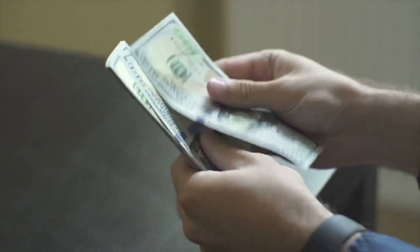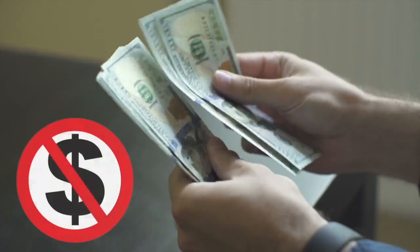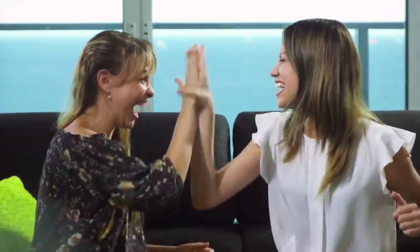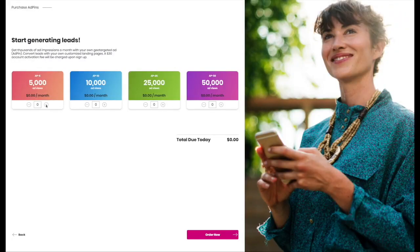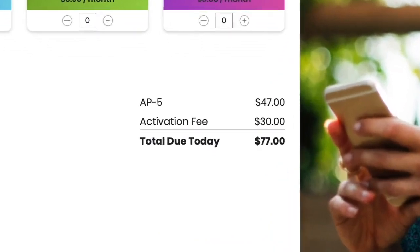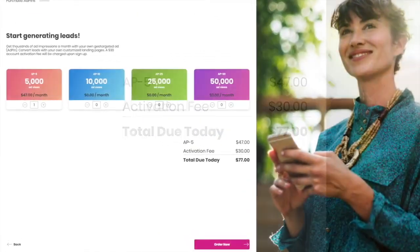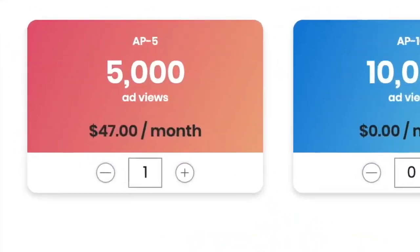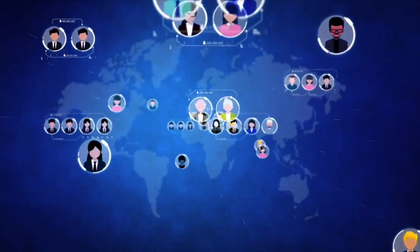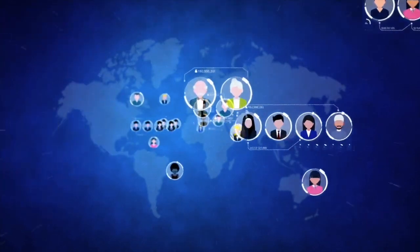So how much would something like this cost? Would you pay a thousand? How about five hundred dollars? What if I told you it wasn't even close to that? You can get started today for as little as $77 with a guaranteed minimum of 5,000 monthly impressions — which means at least 5,000 people viewed your ad in the course of a month.